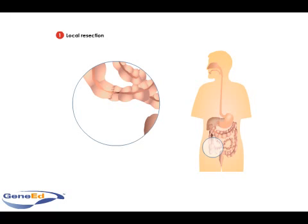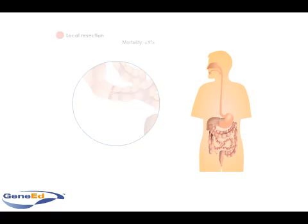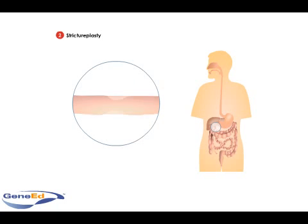The most common types of local resection are ileal resection and ileocolic resection. The operative mortality for local resection is less than 1%. Strictureplasty is an operation that does not involve removing a part of the intestine.